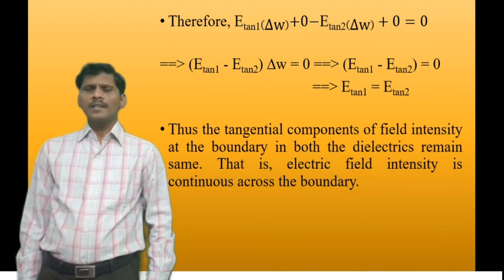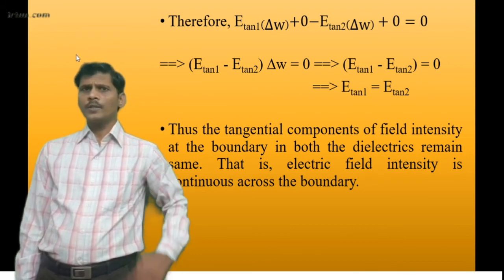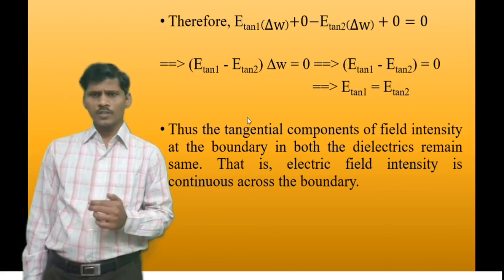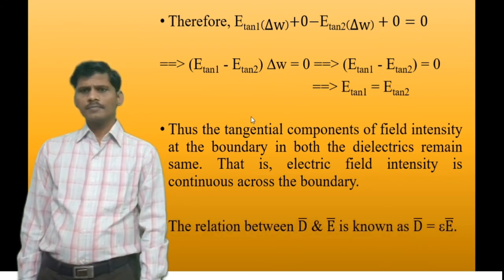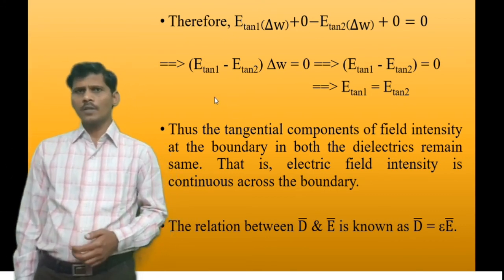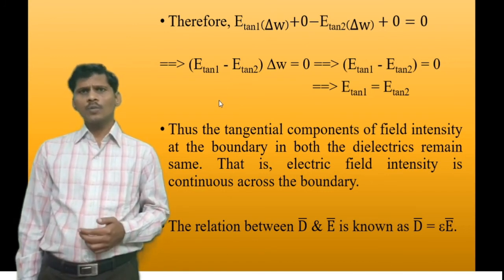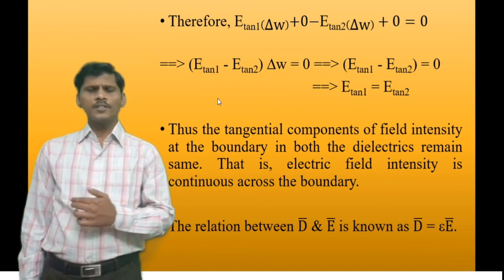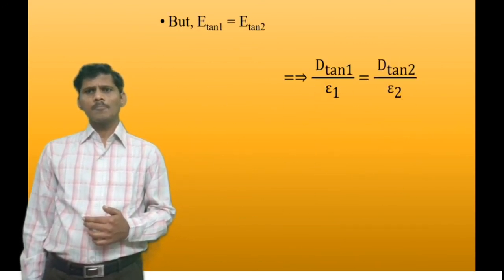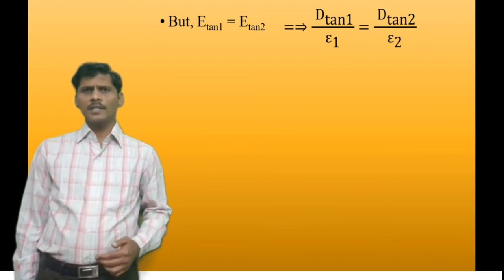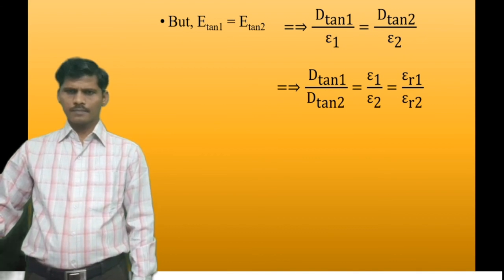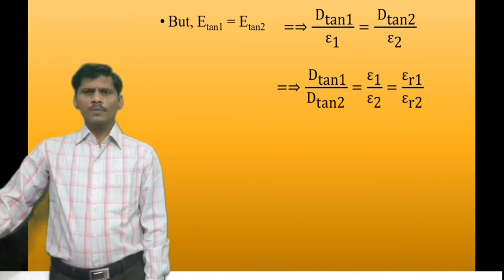So the tangential component of the electric field intensity is the same at the boundary between two perfect dielectric materials: E-tangential-1 equals E-tangential-2. Using the relation D-bar equals epsilon times E-bar, we get E-tangential-1 equals D-tangential-1 divided by epsilon-1, and E-tangential-2 equals D-tangential-2 divided by epsilon-2. Therefore, D-tangential-1 divided by epsilon-1 equals D-tangential-2 divided by epsilon-2.